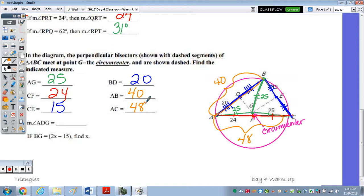Looking at the measure of angle ADG. So let's trace ADG. So this angle right here, well, DG was dotted, I just traced over it, so therefore it's a perpendicular bisector making this a 90 degree angle or a right angle. Because it's a perpendicular bisector and perpendicular lines intersect to form right angles.